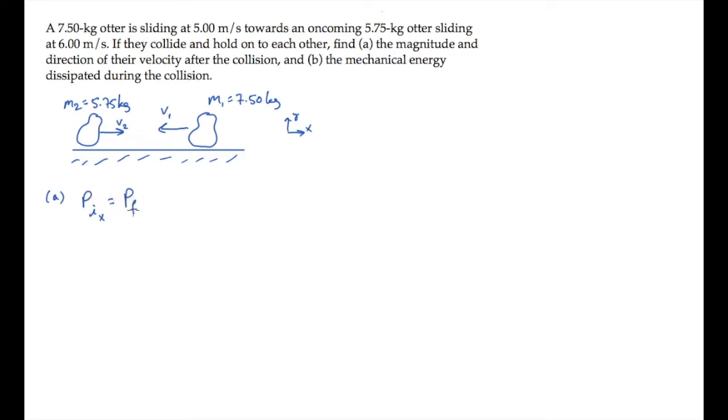The horizontal momentum in the initial state equals that in the final state. We'll call the initial state before the collision, where two things are moving. Otter 1 is moving to the left in the negative x direction, so its momentum is minus m1 v1. Otter 2's momentum is positive to the right, m2 v2.